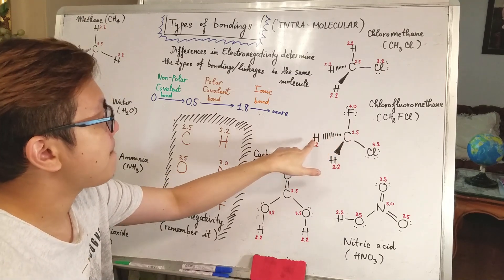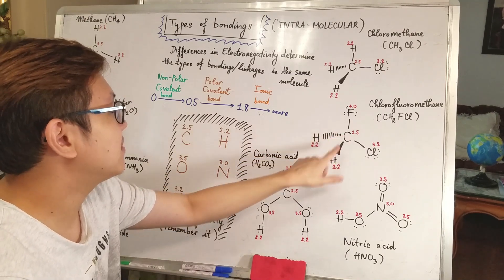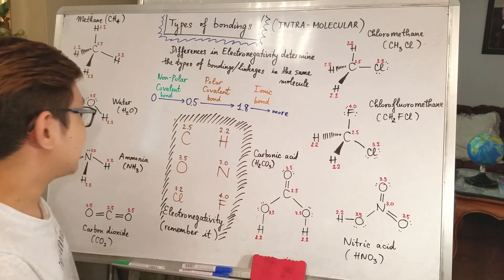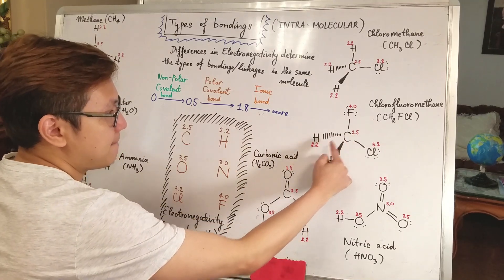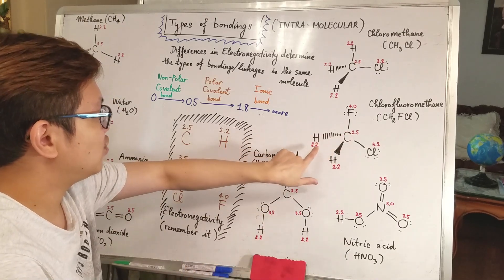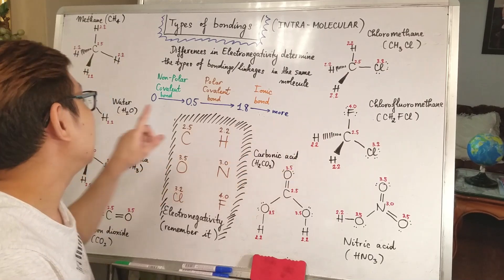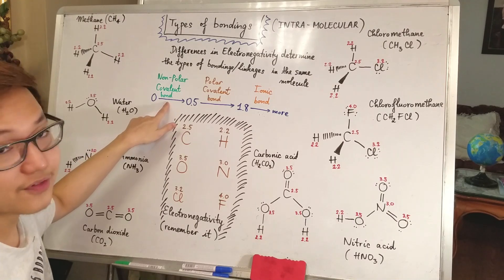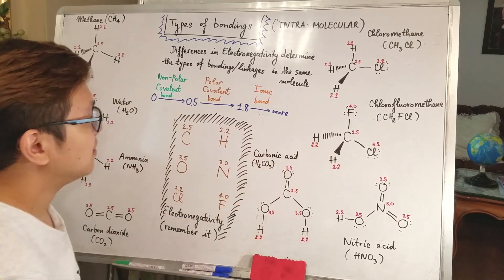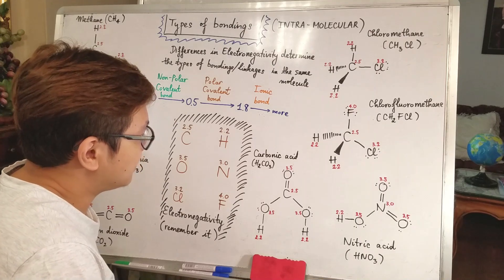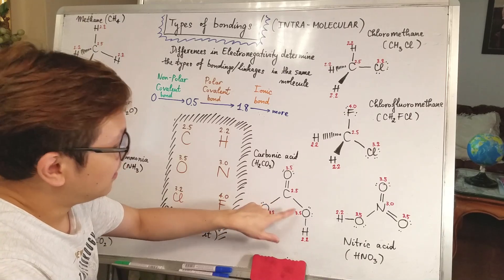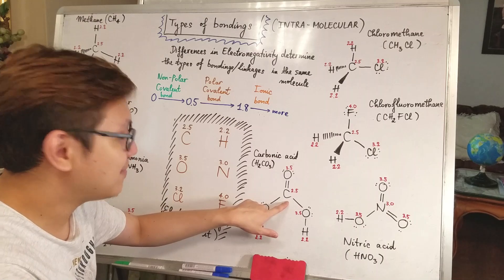Based on the differences in electronegativity between atoms in the same molecule, you can determine what type of bonding or linkage it is. For example, take the bigger number minus the smaller one. For a C–H bond: 2.5 minus 2.2 gives you 0.3, which lies in the region from 0 to 0.5, so that bonding will be a non-polar covalent bond. Another example — between C and O: 3.5 minus 2.5 gives a difference of 1.0.